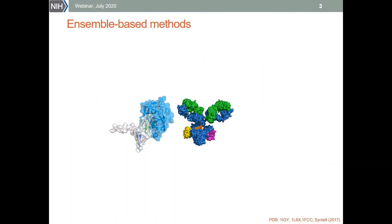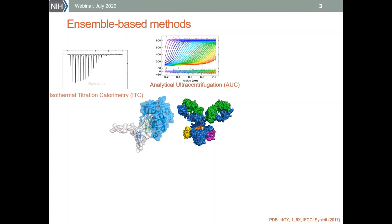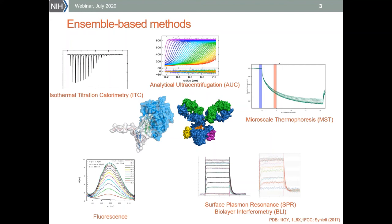When we want to measure binding affinities of interactions in multivariate complexes, one approach is to use the classical biophysical methods. In our core facility, we are fortunate to have access to all important methods that can be used to measure protein binding affinities. Here we see raw data from AUC, ITC, fluorescence, SPR, BLI, and MST that we collected for one of the systems I will be talking about in the next few slides.